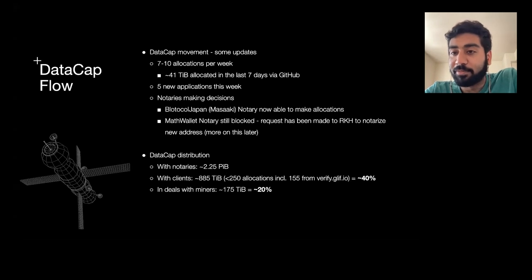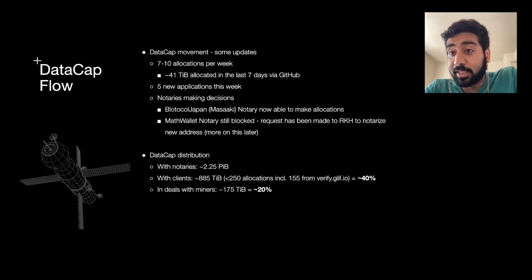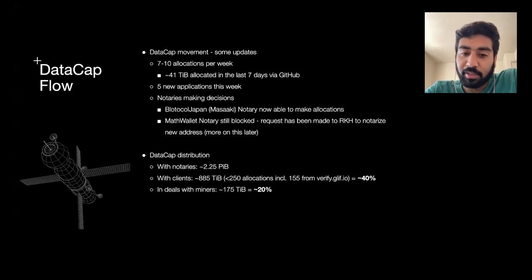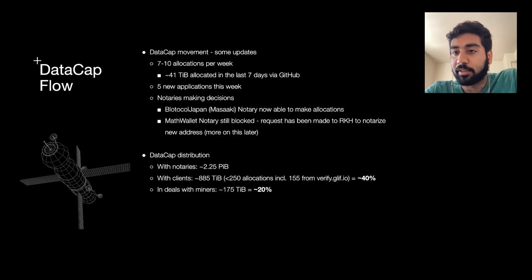Math Wallet is still blocked, so we'll be discussing that later — that should be the last notary left in terms of technical blockers. Some of the more interesting statistics at the meta level: just slightly over two petabytes of data cap was granted to notaries for allocation since the start of this program. From one of the dashboards, about 885 pebibytes of that has been allocated across roughly 250 allocations, of which about 150 are automated and the remaining 100 are from GitHub issues. That represents about 40% of all data cap being allocated to clients — congratulations to notaries for making this great progress.